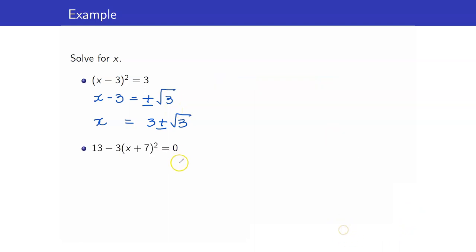Next, we'll just isolate first my term involving the square of x plus 7. This is equal to 13. My x is here.